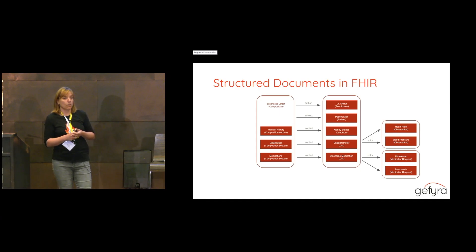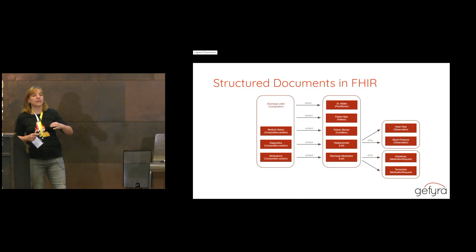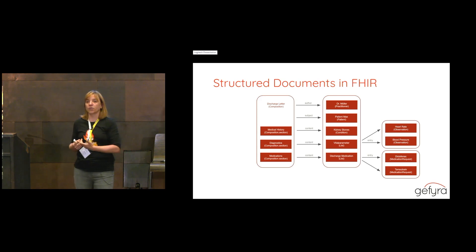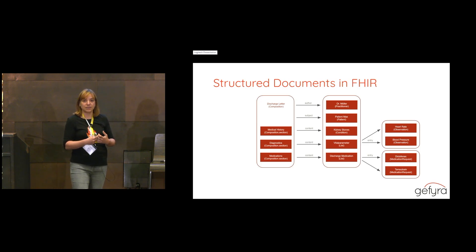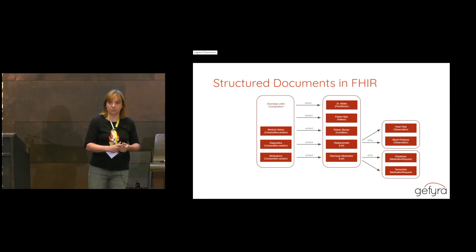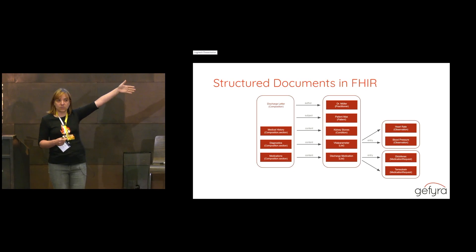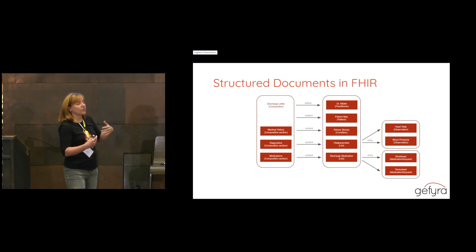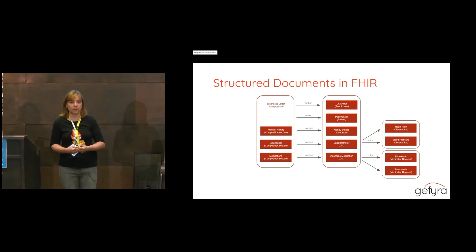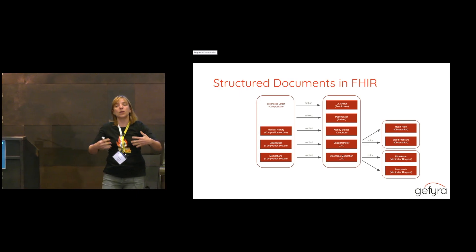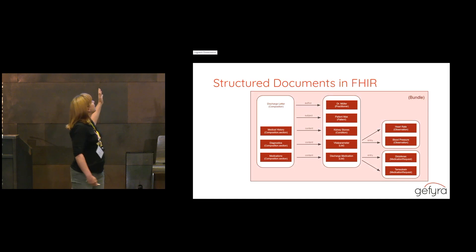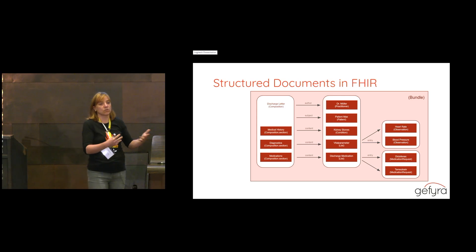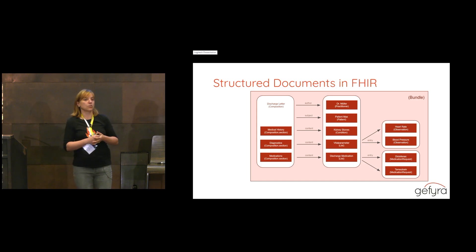With a structured document approach, we usually start by creating a Composition resource. This Composition contains all the document metadata — what kind of document it is, who the author is, when it was created — and it structures the document into different sections. Each section may contain references to other FHIR resources that make up the structured contents. Once finished, we take all the selected resources and put them into a Bundle.